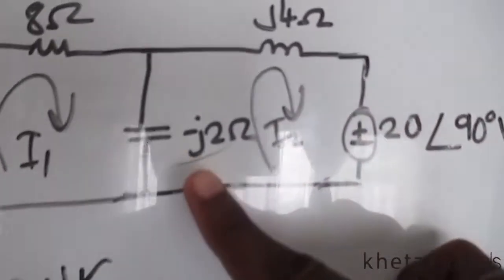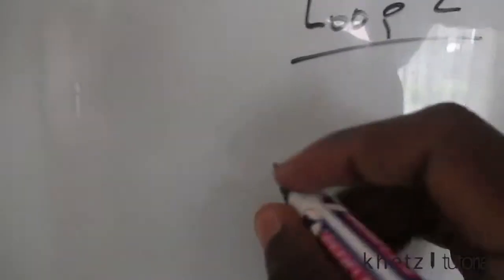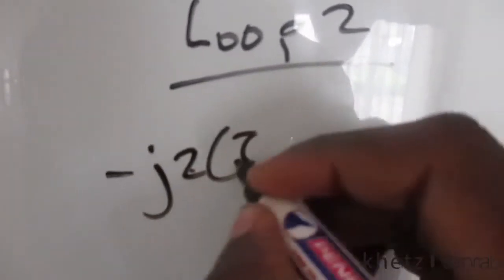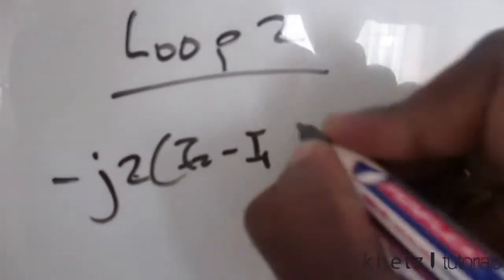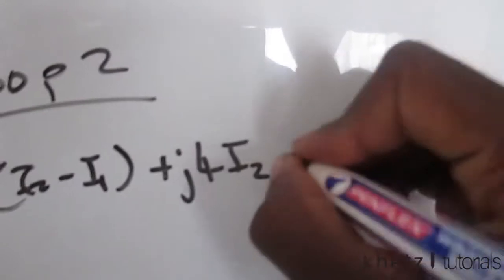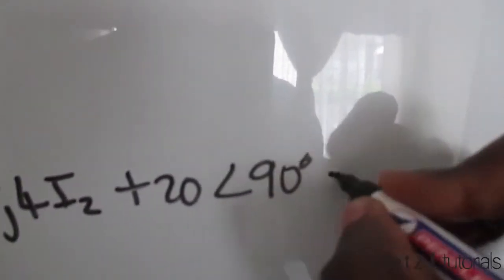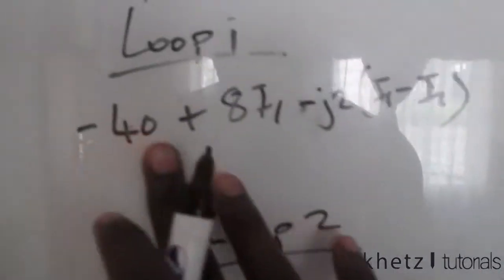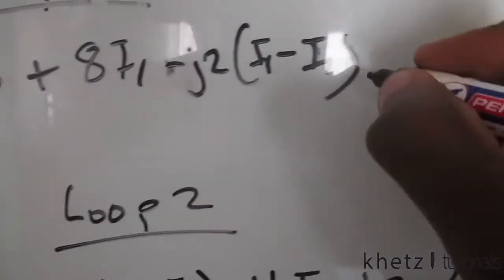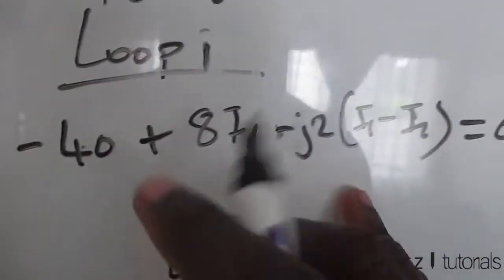Now loop two: we have negative j2 and j4 and the 20∠90° source. Going around that loop we have: −j2·(i2 − i1) + j4·i2 + 20∠90° = 0. This first equation also equals zero, so we now combine like terms in each of these equations.